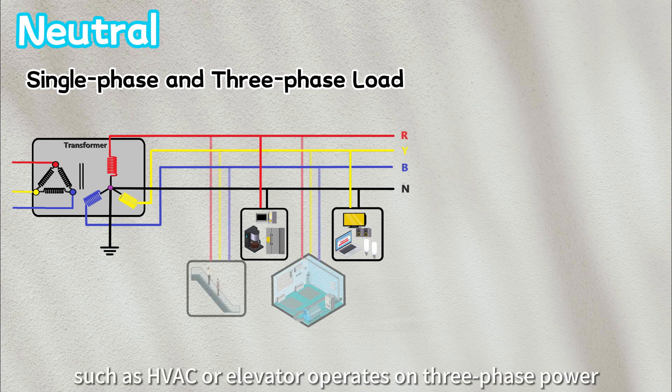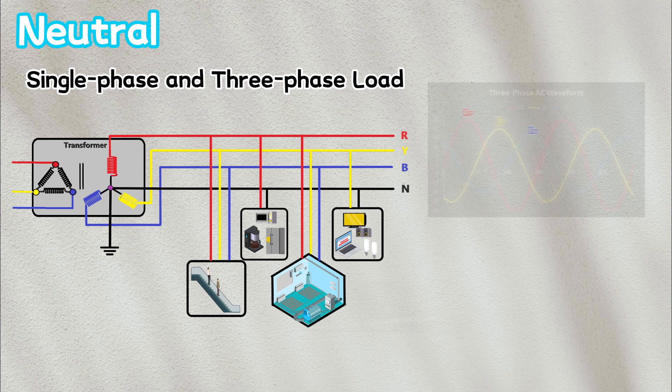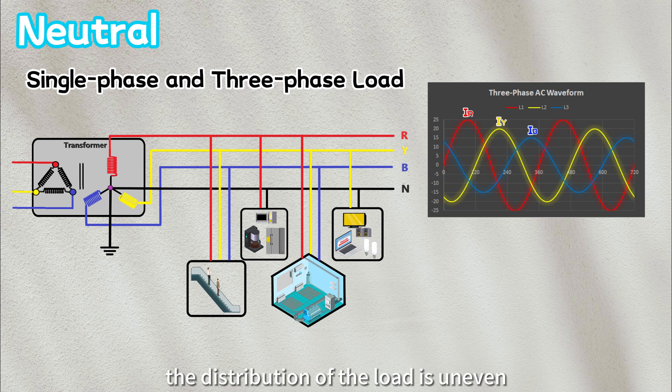while larger machinery, such as HVAC, or elevator operates on three-phase power. In this scenario, the distribution of the load is uneven and the phases may not achieve perfect balance.